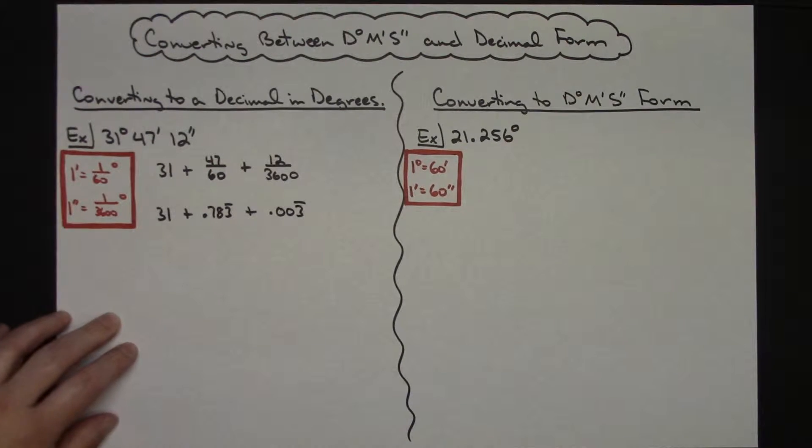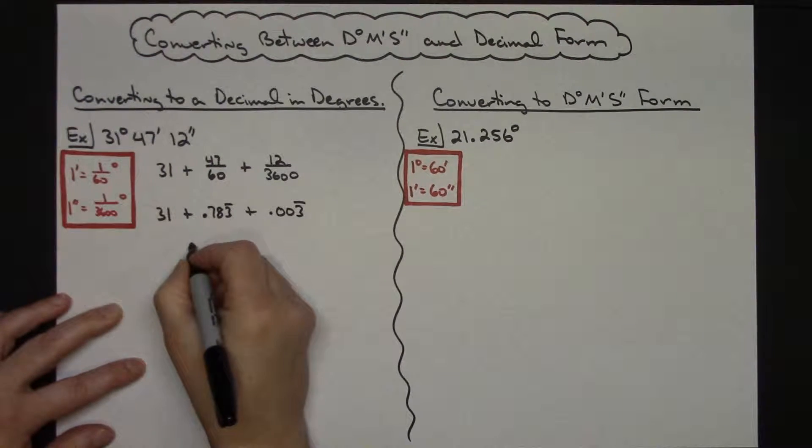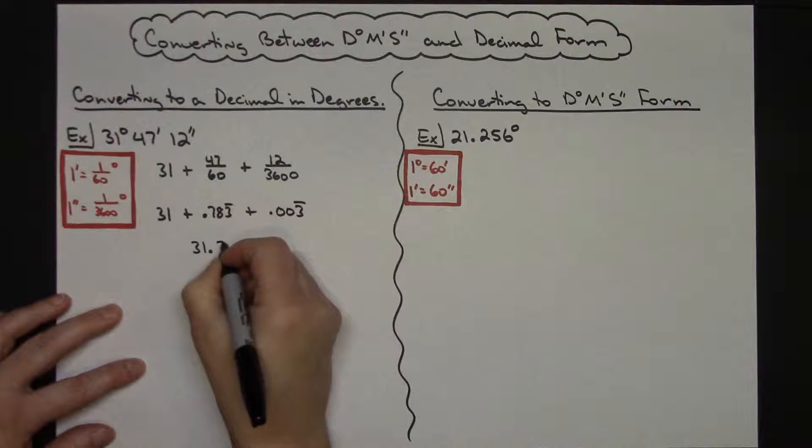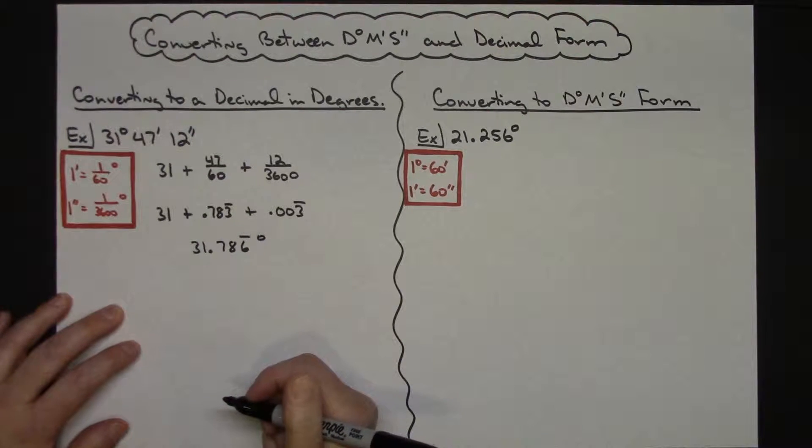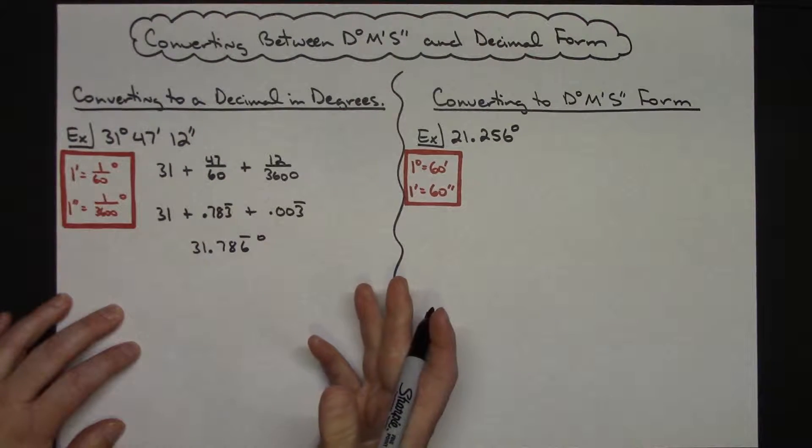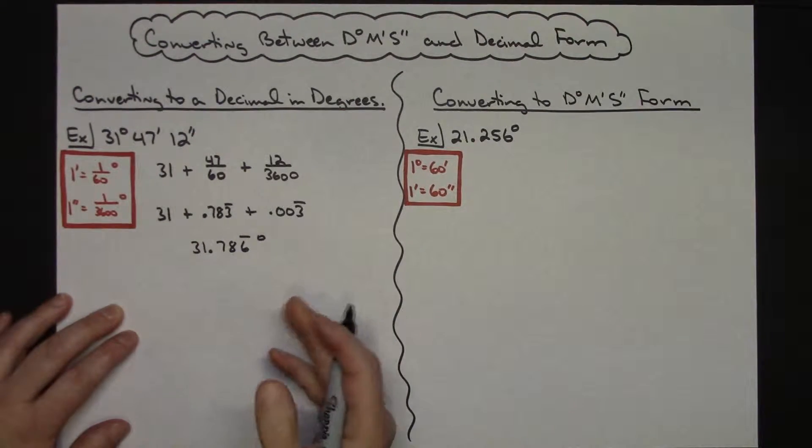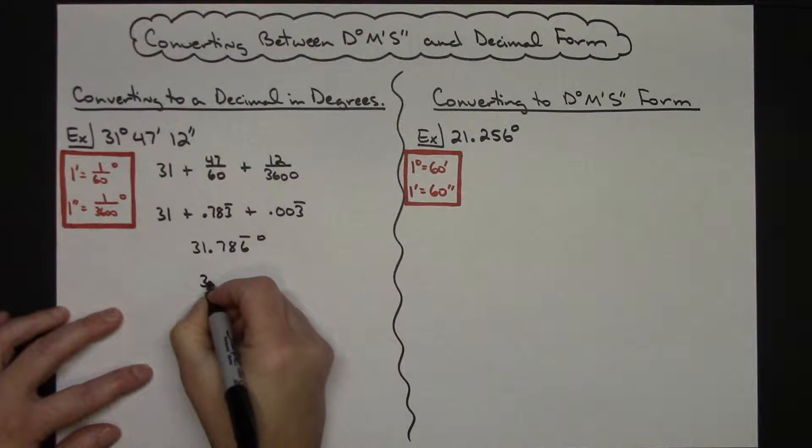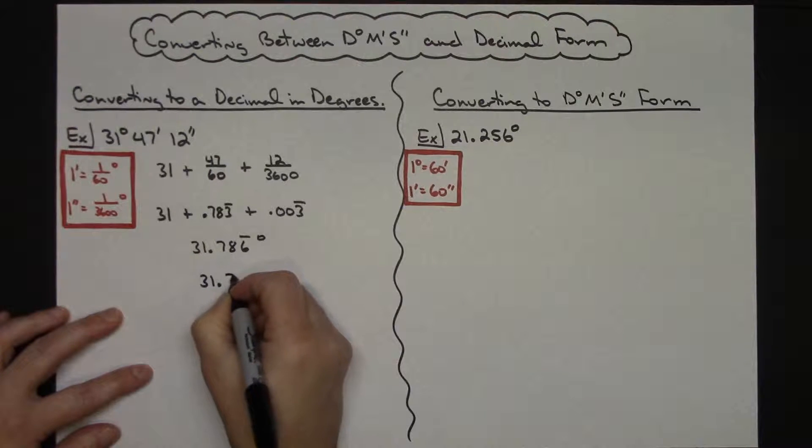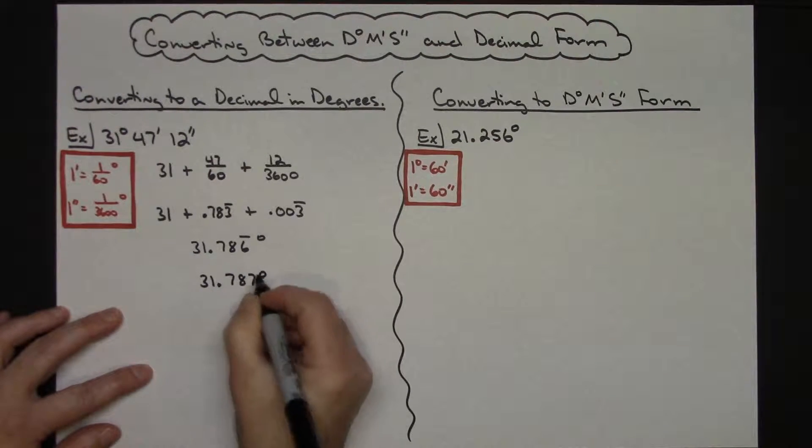But doing it all in your calculator, one great big answer here you would have 31.786 repeating degrees. And generally then we have to tell you to round to either like the tens, hundreds, or thousands, whatever happens to be. Let's go out three places on this one which would make it 31.787 degrees.